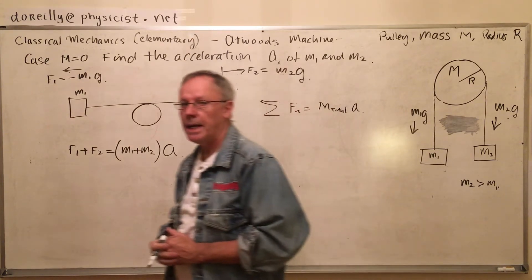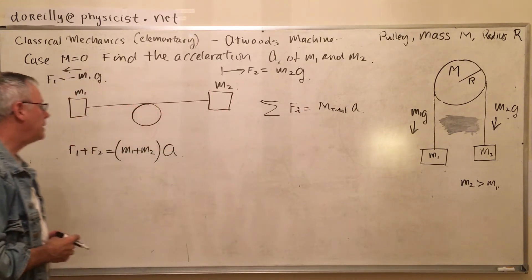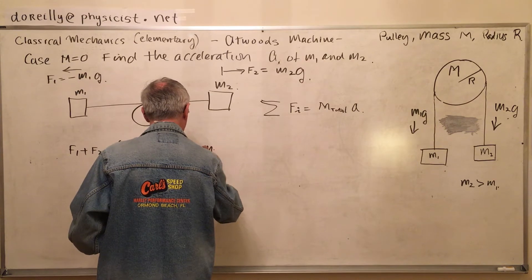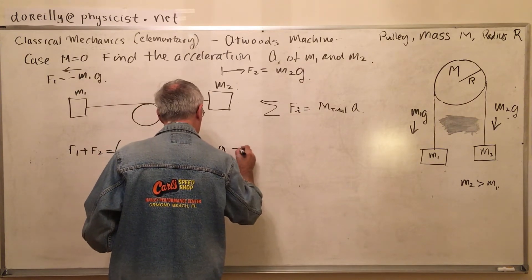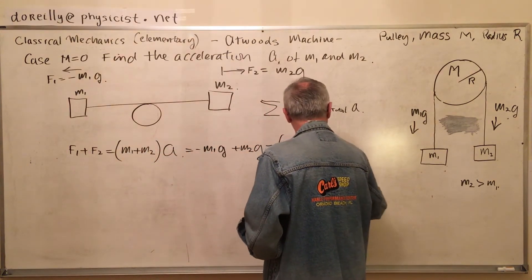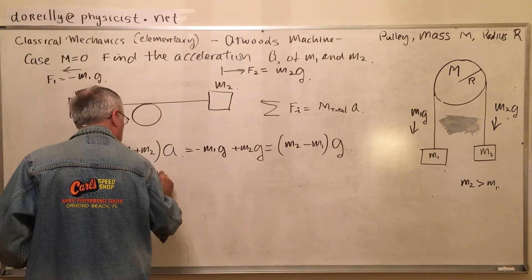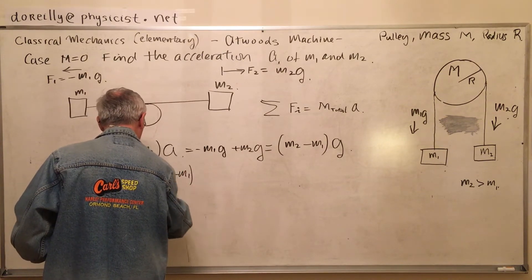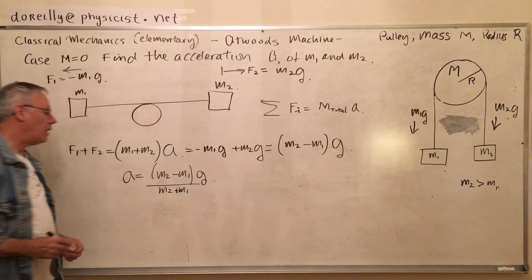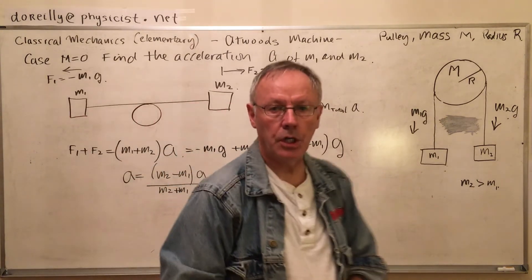If the system has a total mass m total, its net acceleration results from the summing of the forces on it. So now we can add up these guys here and we get that expression, so we can solve for a. And that's the acceleration — the difference between the two masses over their sum, times the acceleration due to gravity, is the acceleration of the system.